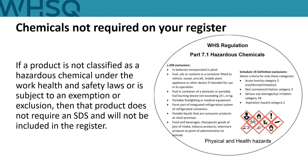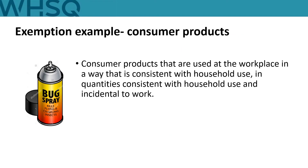WHS laws are not designed to cover every chemical product or circumstance. The focus is on chemicals that have a potential to cause harm to workers and other people during storage, handling and use. When the WHS laws exclude or exempt a chemical from having an SDS, it is not required to be included in the register. Section 328 and schedule 19 of the WHS Regulation provides more detailed information about what is excluded. An example of an exemption is for consumer products that are used at a workplace in a way that is consistent with household use, in quantities consistent with household use, and incidental to work activities.